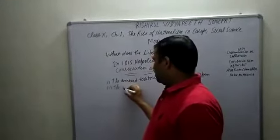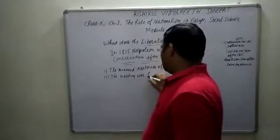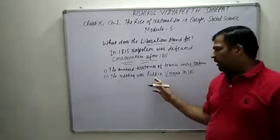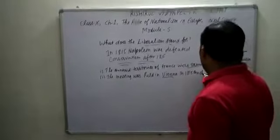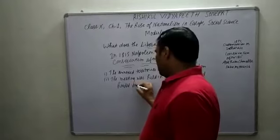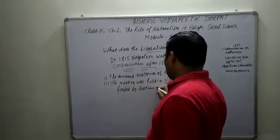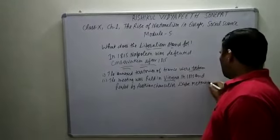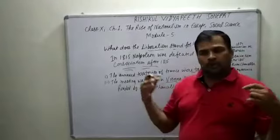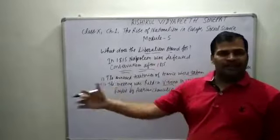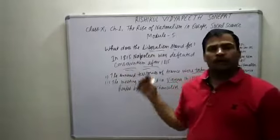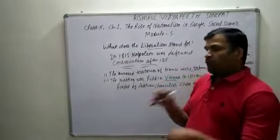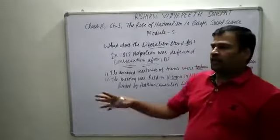The Congress of Vienna was held, headed by Austrian Chancellor Duke Metternich. A decision was taken that whatever territories and resources Napoleon had grabbed or acquired from other territories would be divided. For example, Poland was given to Russia, and Saxony or Avignon were given to England. Other territories and resources were also taken back from France.